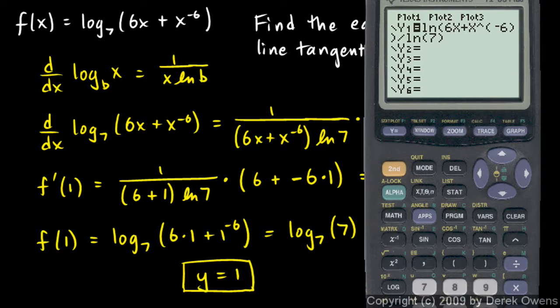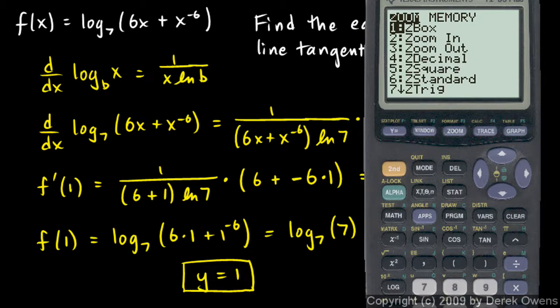Instead of log base 7 of 6x plus x to the negative 6, I have the natural log of 6x plus x to the negative 6 over the natural log of 7. That's mathematically equivalent to the given function. I'm just simply using the change of base formula, and it's typed in there in the calculator notation. And I will set the zoom setting here to standard zoom, and take a look.